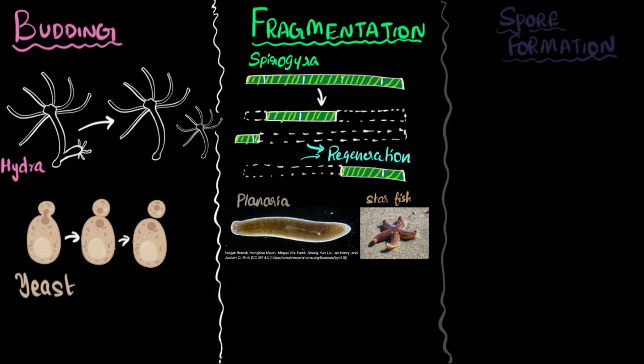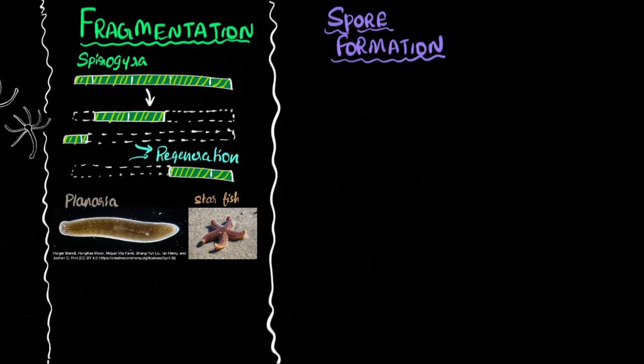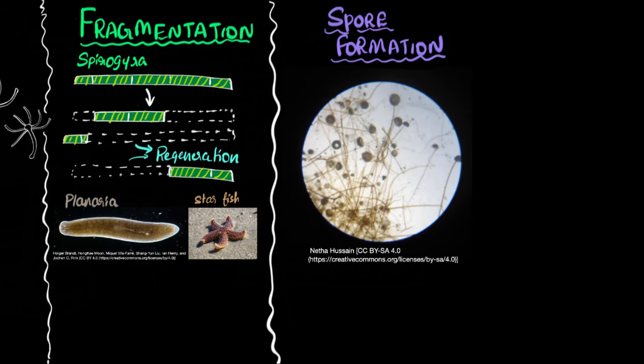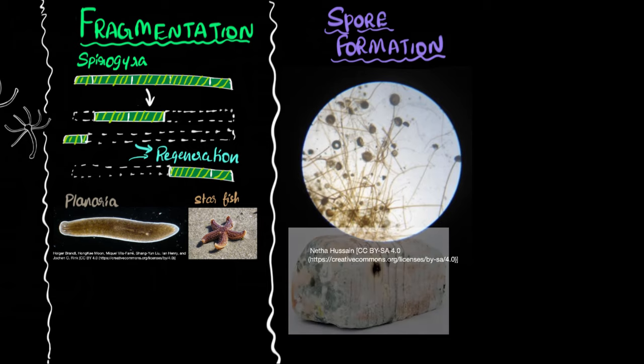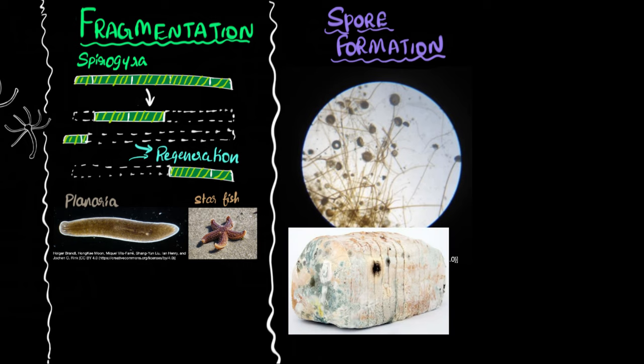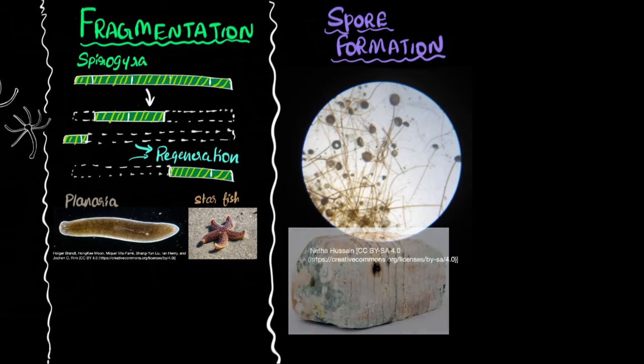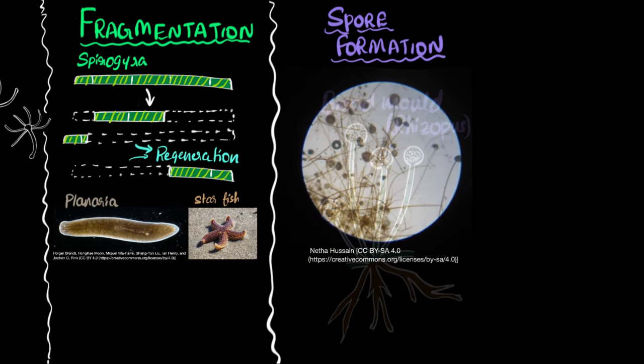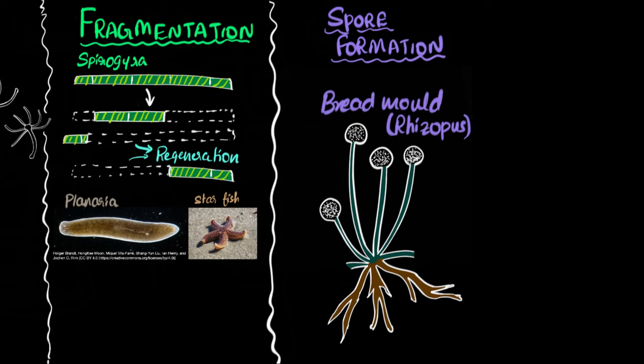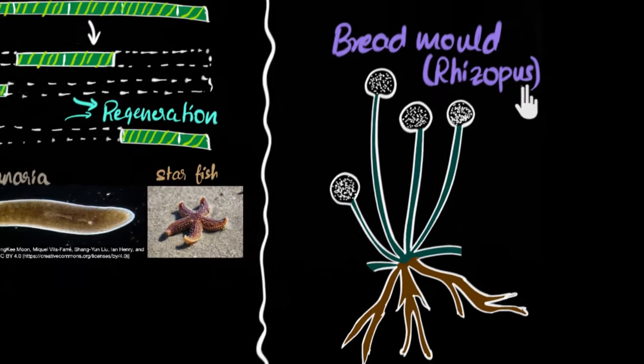Lastly, this brings us to spore formation. The famous example for this is a fungus called bread mold. Again, we're looking at it under the microscope over here. And you might know about this. If you take a piece of bread and you just leave it outside, and if it's moist, you see a lot of fungus growing on that. Well, that's basically this bread mold. Again, let me make a drawing of this. So here's what a bread mold would look like if you zoom in and look under a microscope.